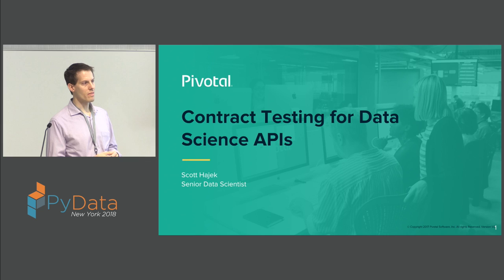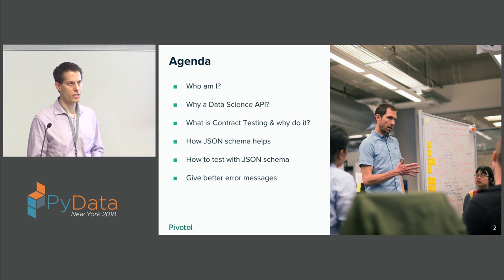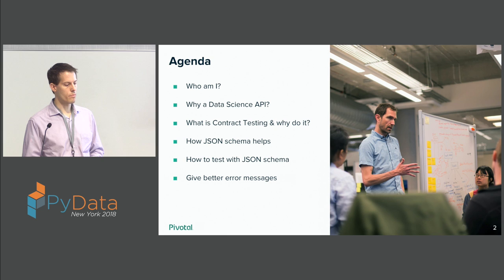After briefly telling you a little more about myself, I'm going to talk about how part of the solution to this question of collaboration was a data science API, why that was a good thing, what contract testing is and why that was an important part of making that collaboration successful, and how our way of solving that problem was something called JSON schema, and how to use it in your testing and also to give better error messages.